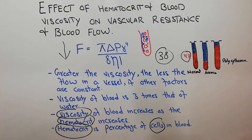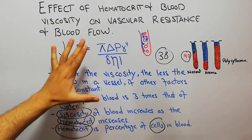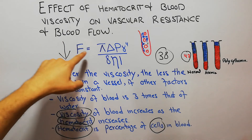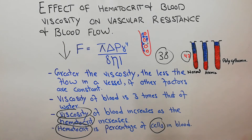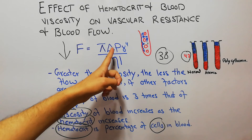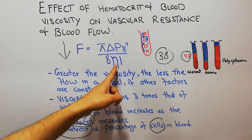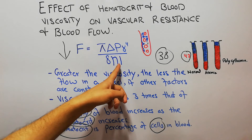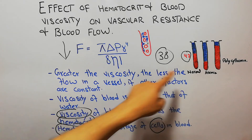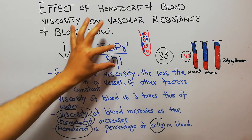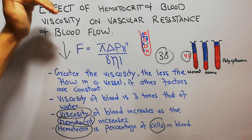That was a summary of the effect of hematocrit and blood viscosity on vascular resistance and blood flow, in the light of Poiseuille's equation. Poiseuille's equation shows the factors that influence blood flow: the pressure difference on both sides of the vessel, the radius of the vessel, the viscosity of the fluid, and the length of the vessel. Greater the viscosity, less the flow if other factors are constant.